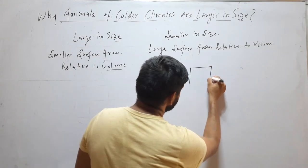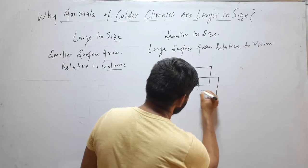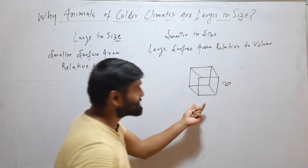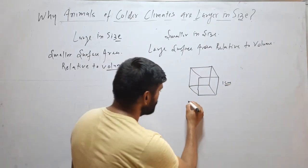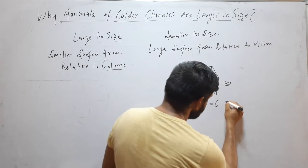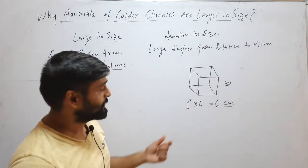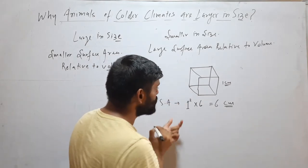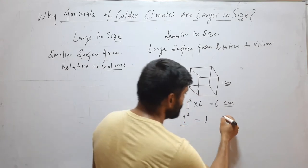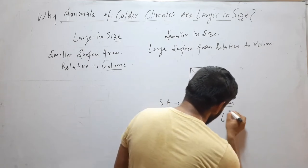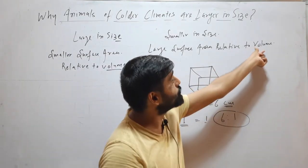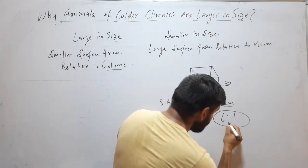Suppose we have this cube and one side of that cube is 1 cm. The surface area of this cube will be the square of one side into 6, that is 6 cm squared. And the volume of that cube will be 1 cubed, that is 1. So it has a 6 to 1 surface area to volume ratio. Relative to volume, the volume is 1 and the surface area is 6.